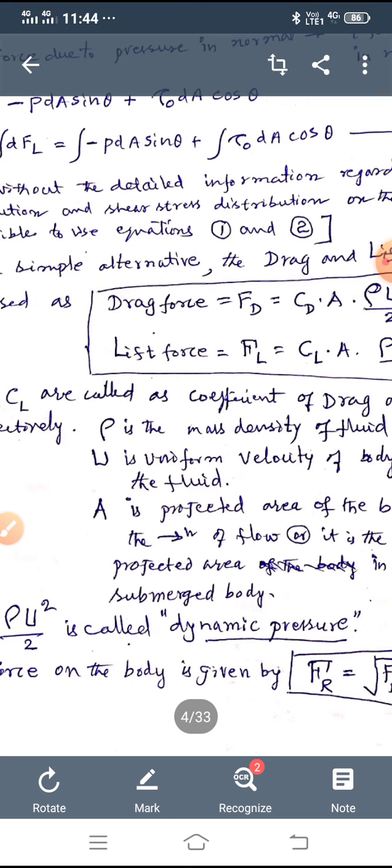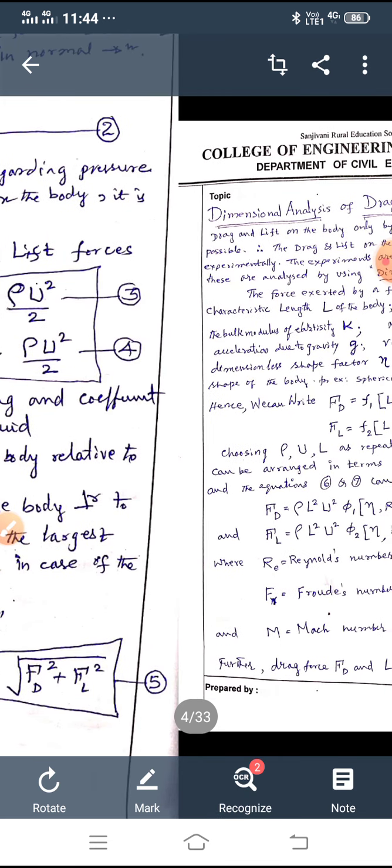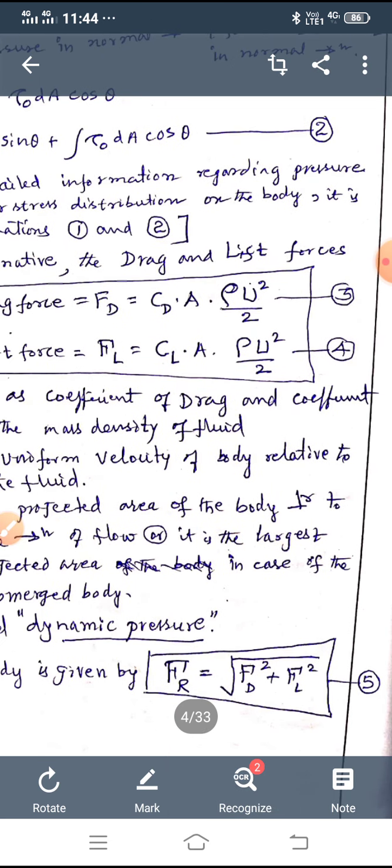After finding out FD and FL, it is possible to calculate FR is equal to square root of FD² plus FL².